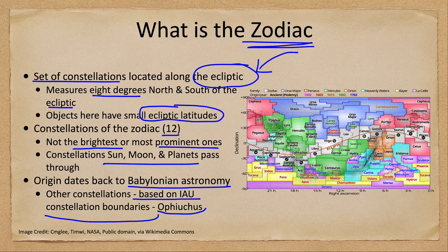You can note that there is one section where the path goes through a different constellation. That is right in this region here, where the constellation of Scorpius is too far south and the Sun does not pass through it. So the Sun passes through Ophiuchus instead. In fact, it only spends a very short time in a small portion of the constellation of Scorpius.